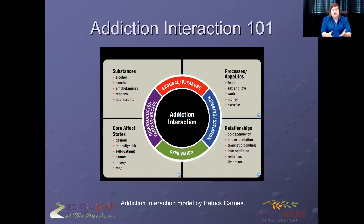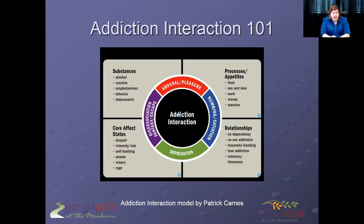Let's dive into addiction interaction. This is the addiction interaction model by Patrick Carnes. If you work with the Recovery Start Kit or any of those materials, this will be really familiar to you. That colored ring in the center represents your pathways to addiction — arousal and pleasure pathways, numbing pathways, deprivation, and dissociative fantasy. Here are some examples of things you might see young adults using in each of these areas.